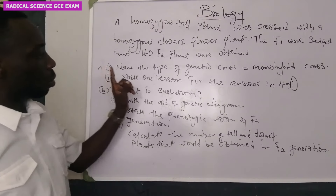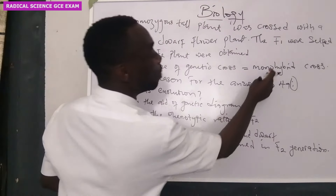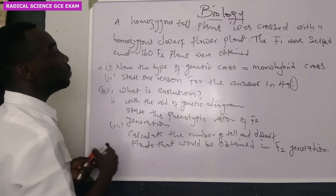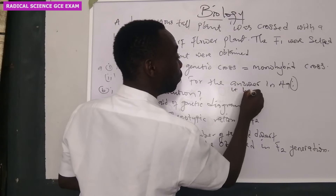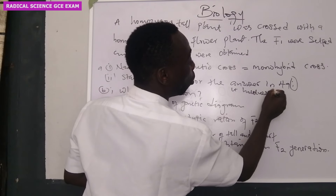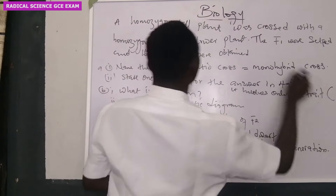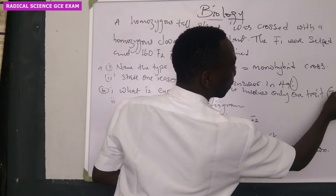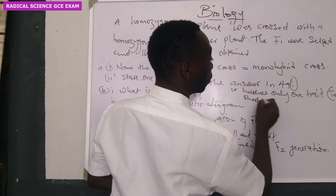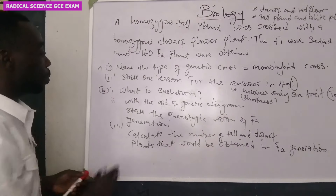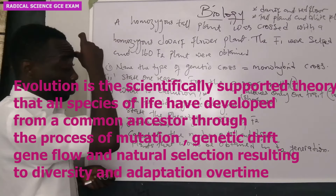Now, why — that is number two — state one reason for the answer. The reason why it is a monohybrid cross is because it involves only one trait. And what is that trait? The trait of tallness or shortness. It's either you are tall or you are short. So take note of that.